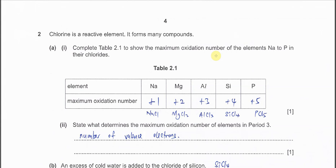Question 2, part 1. Complete the table with the maximum oxidation number for the elements which react with chlorine to form chlorides.